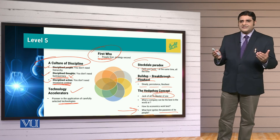Dear students, to conclude everything: to become a Level 5 leader, you must focus on all these aspects — humility, will, Stockdale Paradox, and all the related elements. Without focusing on these, execution of Level 5 leadership will not be possible. Thank you.